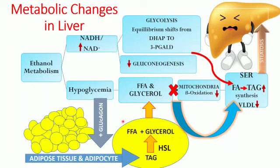Both these products — free fatty acids and glycerol — move into the circulation and reach the liver. In the liver, free fatty acids and glycerol would normally enter the mitochondria for beta oxidation, but this will not occur because beta oxidation is decreased due to already very high levels of NADH. There is no NAD+ available to be consumed by the beta oxidation pathway, so this pathway is inhibited.